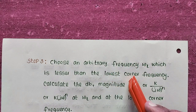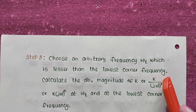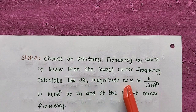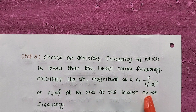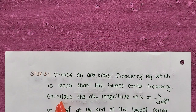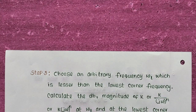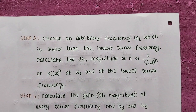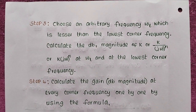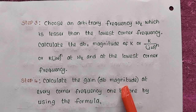We choose ωl less than the lowest corner frequency and calculate the dB magnitude of k, k/(jω)ⁿ, or k·(jω)ⁿ at ωl and also at the lowest corner frequency itself.